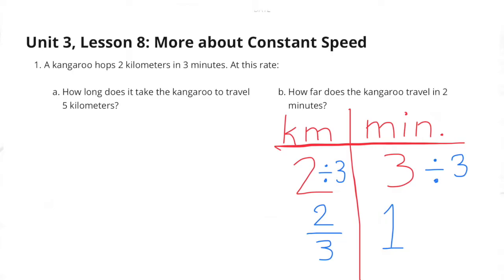Part b: how far does the kangaroo travel in two minutes? Again, we have kilometers on the left and minutes on the right. Two kilometers in three minutes. So let's divide the three minutes by three to get one minute, and the two kilometers by three to get two-thirds kilometers. So we know that after one minute the kangaroo travels two-thirds kilometers.